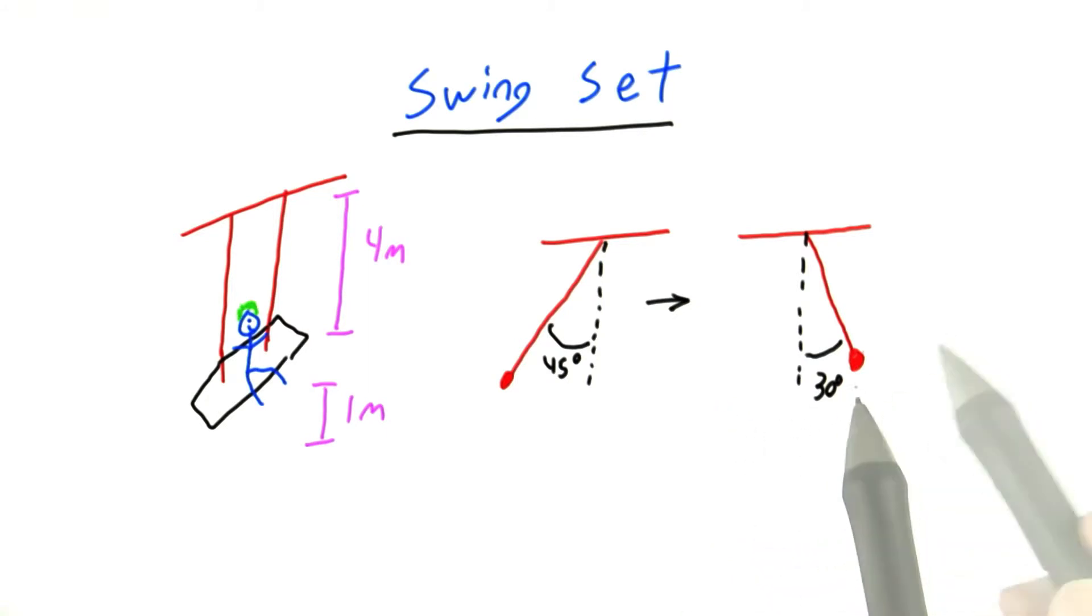however, you decide to jump off the swing when the swing makes an angle with a vertical of exactly 30 degrees.